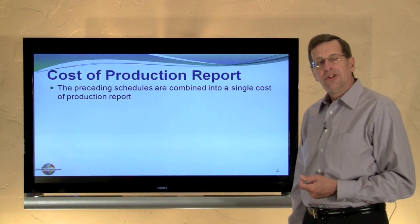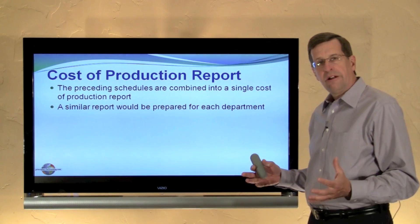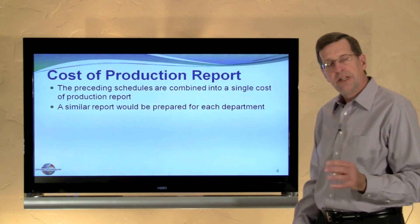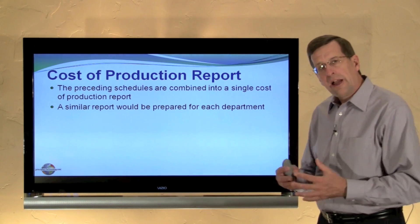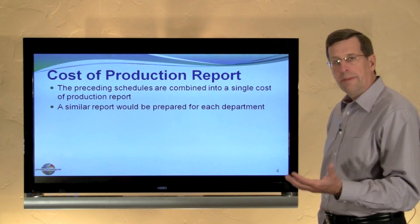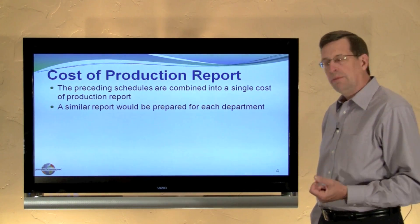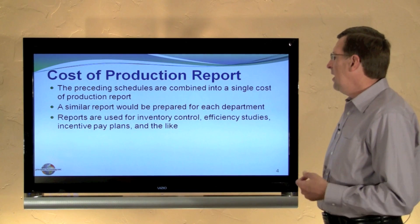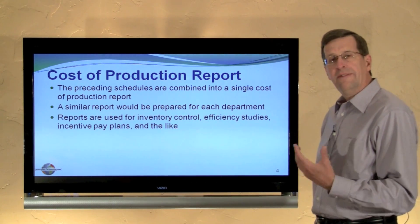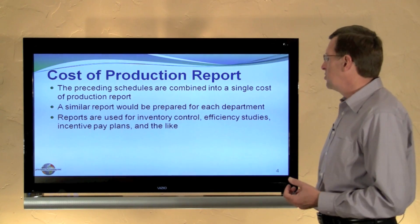The preceding schedules are combined into a single cost of production report. The comprehensive example doesn't display well on the screen — it's a fairly large report — but in your textbook it's a combination of all the components we've looked at previously: the unit reconciliation, the calculation of equivalent units, the calculation of equivalent cost per unit, and then the assignment of cost to the final output. We would need to prepare a similar report for each department each month. Those reports are used for inventory control, efficiency study, and incentive pay plans, but they can also serve as the point of entry into the general ledger.